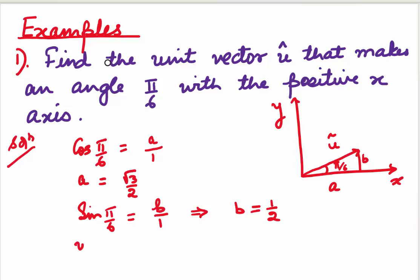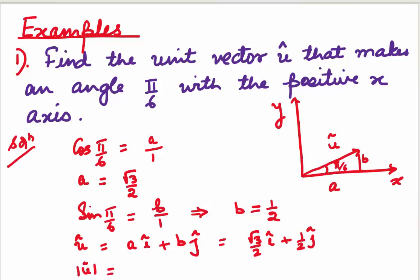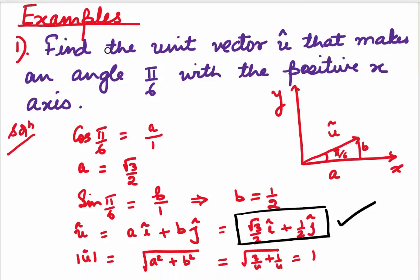So what does our unit vector u become? Unit vector u = a·i + b·j, where i and j are unit vectors along the x and y-axis. Substituting values of a and b, we get u = (√3/2)i + (1/2)j. To verify it is a unit vector, find the modulus: √((3/4) + (1/4)) = √1 = 1. So we have confirmed it is a unit vector.